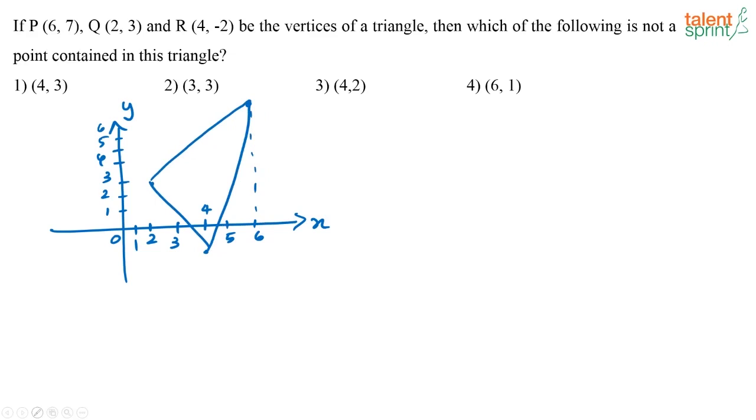What is the question? Which of the following is not contained in the triangle? Now just look at the options that is given. You have 4, 3. Obviously, that most likely will come inside the triangle, so that cannot be your answer. 3, 3. Again, 3, 3 can also come inside your triangle only, so that also will not be your answer. 4, 2. Again, that will also come inside the triangle, so not your answer. 6, 1. This seems to be coming out of the triangle. You can just draw a rough diagram and cross-check with the options. By looking at the diagram itself, you know that your answer is going to be 6, 1. That is option 4.